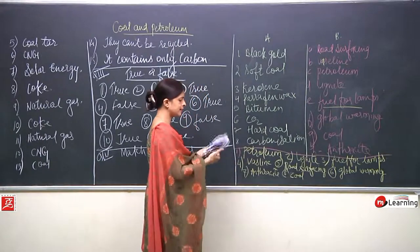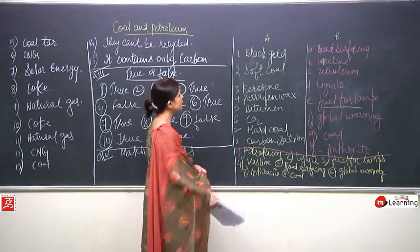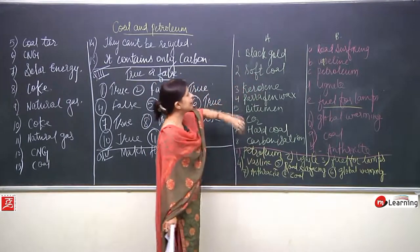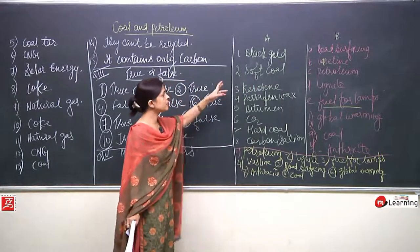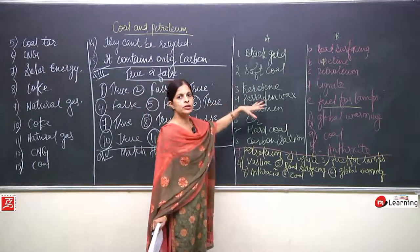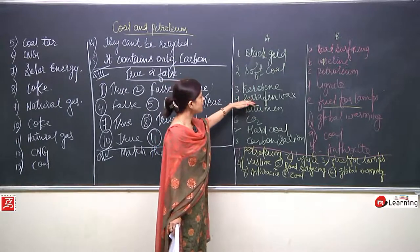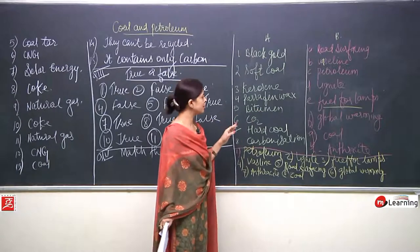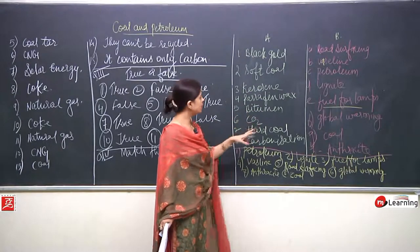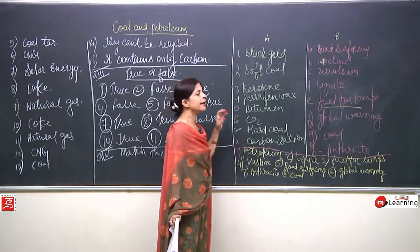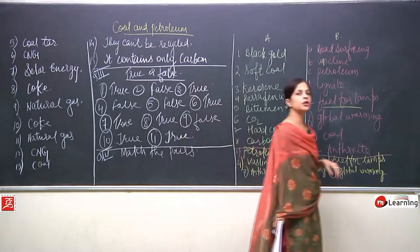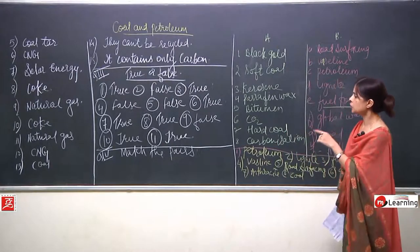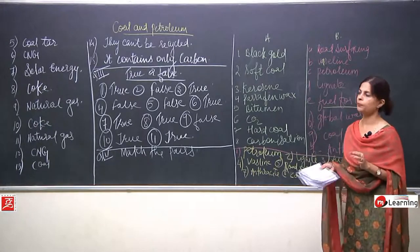Just have a quick look at this. We are talking about the match the column. Black gold — petroleum. Soft coal — lignite, it is a soft coal. Kerosene is used in the lamps. Paraffin wax is used to make vaseline. Bitumen is used for road surfacing. Then carbon dioxide — global warming. Hard coal is anthracite, and due to carbonization, coal is formed. This was question number four, first match the column.